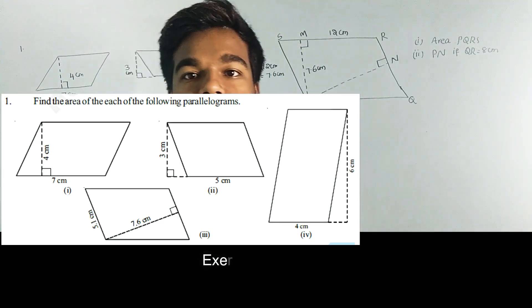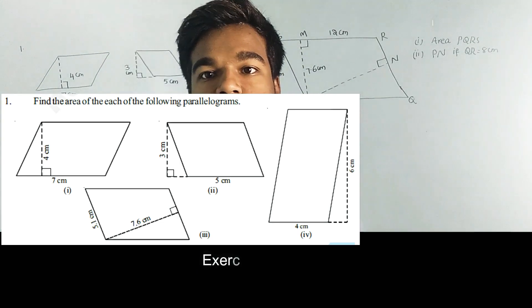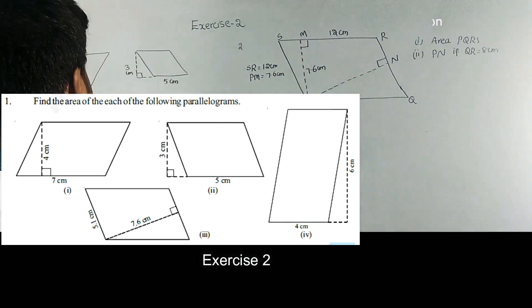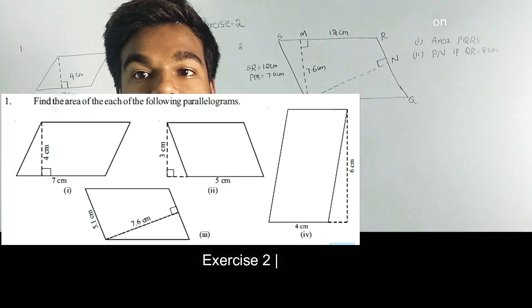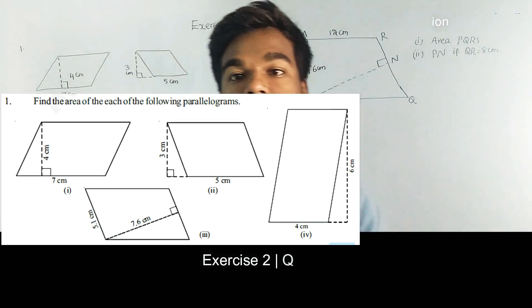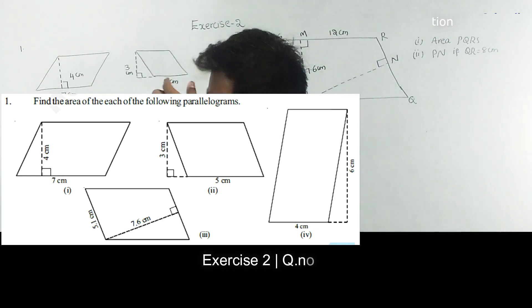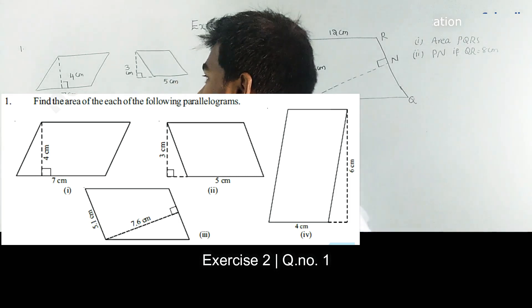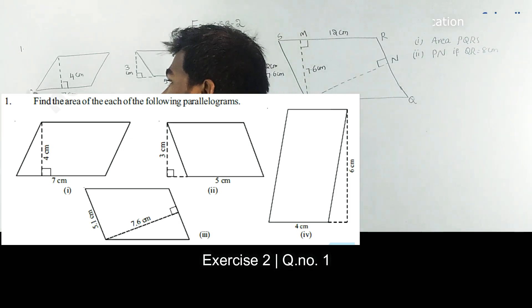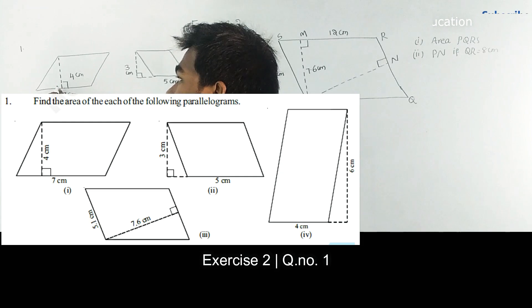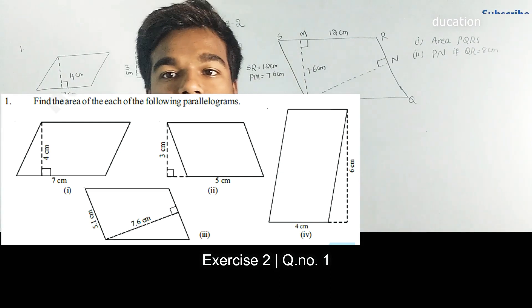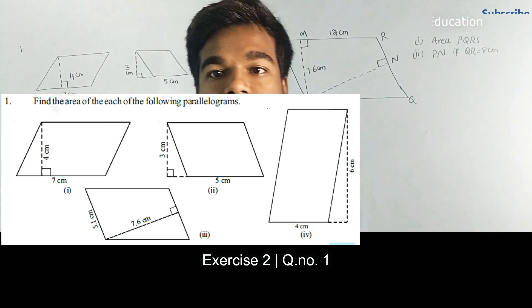Hello viewers, in this module we are going to discuss the solutions for Exercise 2. We need to find the area of given parallelograms. Base means the bottom measurement, and height is the perpendicular distance to the base.